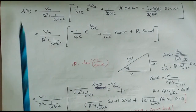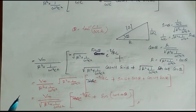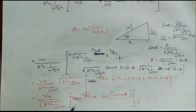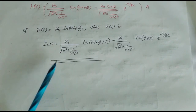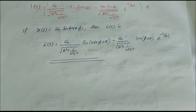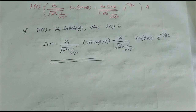Substituting these into the equation for i(t), we obtain: i(t) = Vm / √(R² + 1/(ωC)²) · [−sin θ·e^(−t/RC) + sin(ωt + θ)] amperes. In general, if V(t) = Vm·sin(ωt + φ), then i(t) = [Vm / √(R² + 1/(ωC)²)]·sin(ωt + φ + θ) − [Vm / √(R² + 1/(ωC)²)]·sin(φ + θ)·e^(−t/τ), where τ = RC is the time constant of the circuit.